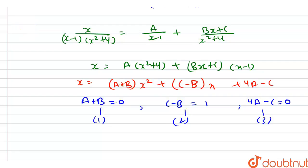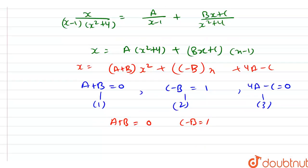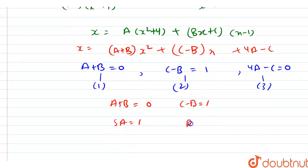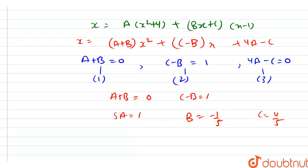Solving these equations: adding equations gives 5A equals 1, so A equals 1/5. From equation 1, B equals minus 1/5. From equation 3, C equals 4A equals 4/5.